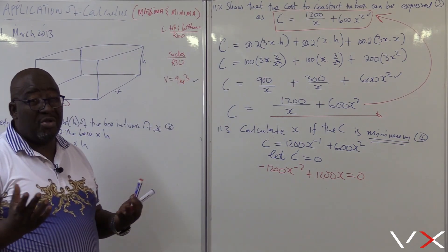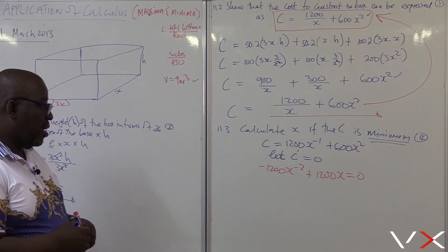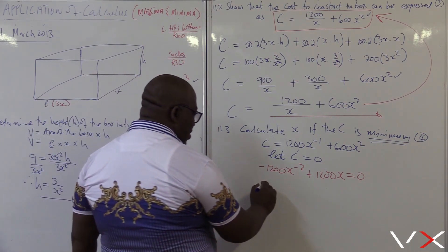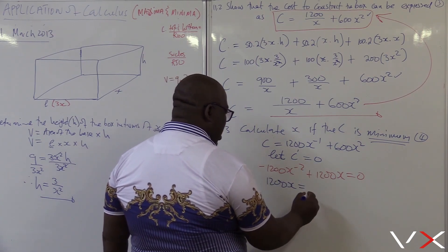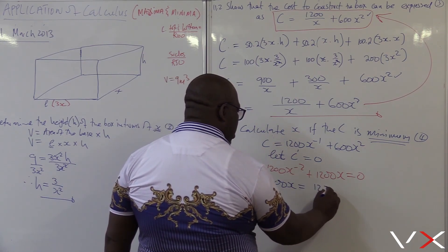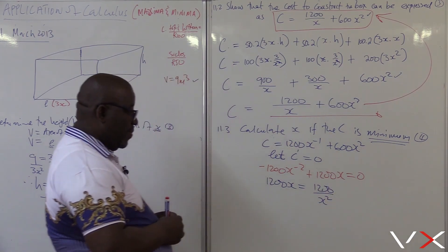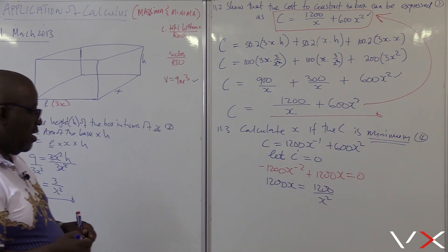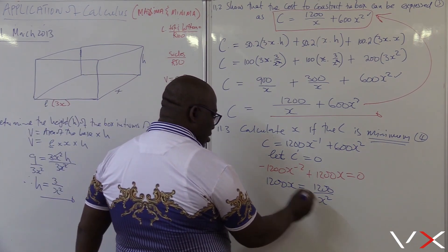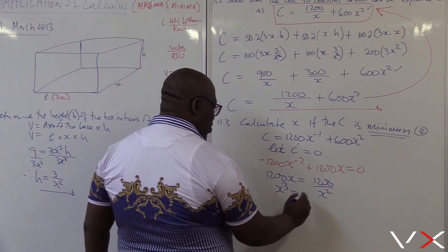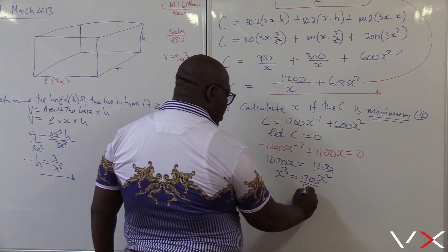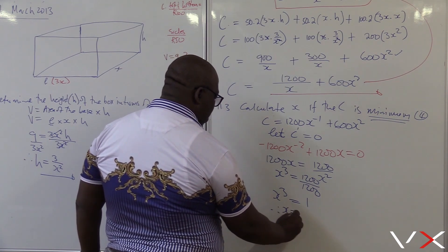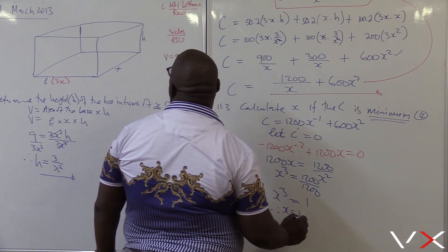Now let's differentiate. Differentiating 1,200x to the minus 1 gives minus 1,200 x to the power minus 2. Differentiating 600x squared: 6 times 2 is 12, giving plus 1,200 x to the power 1. This derivative is equal to zero. We're looking for the value of x. Take the negative term to the other side so it becomes positive: 1,200x equals 1,200 over x squared. Cross multiply: x cubed equals 1,200 over 1,200, so x cubed equals 1. Therefore x equals 1. This distance is 1 meter.